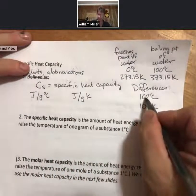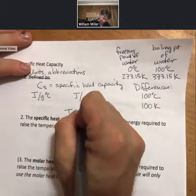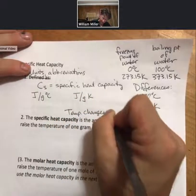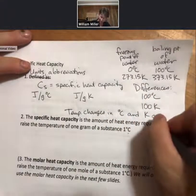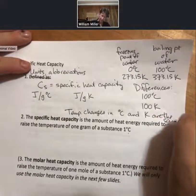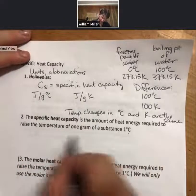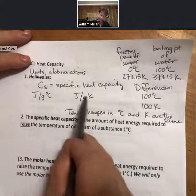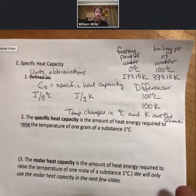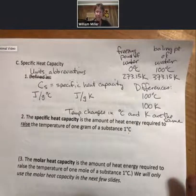Temperature changes in degrees Celsius and Kelvin are the same. In the definition, you are raising or changing the temperature by a certain amount of degrees Celsius or a certain amount of Kelvin. So if you see these different units, you don't have to worry about conversions between them. Just make sure that you have your delta T, your changes in temperature, done correctly.